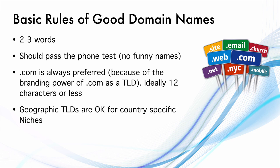Geographic TLDs are okay for country-specific niches. If you are building a website just for India and never for outside India, it's okay to have a .in domain name. But if someone else has a website at the .com version, over time people might end up visiting the .com version and you may lose some traffic, especially if you are competing in the same industry. Most very big websites in India usually have a .com version as well, even if they built the website on .in. TLDs basically means top-level domain name — the extension that comes after the dot. So .net is a TLD, .com is a TLD, .site is a TLD, and things like that.